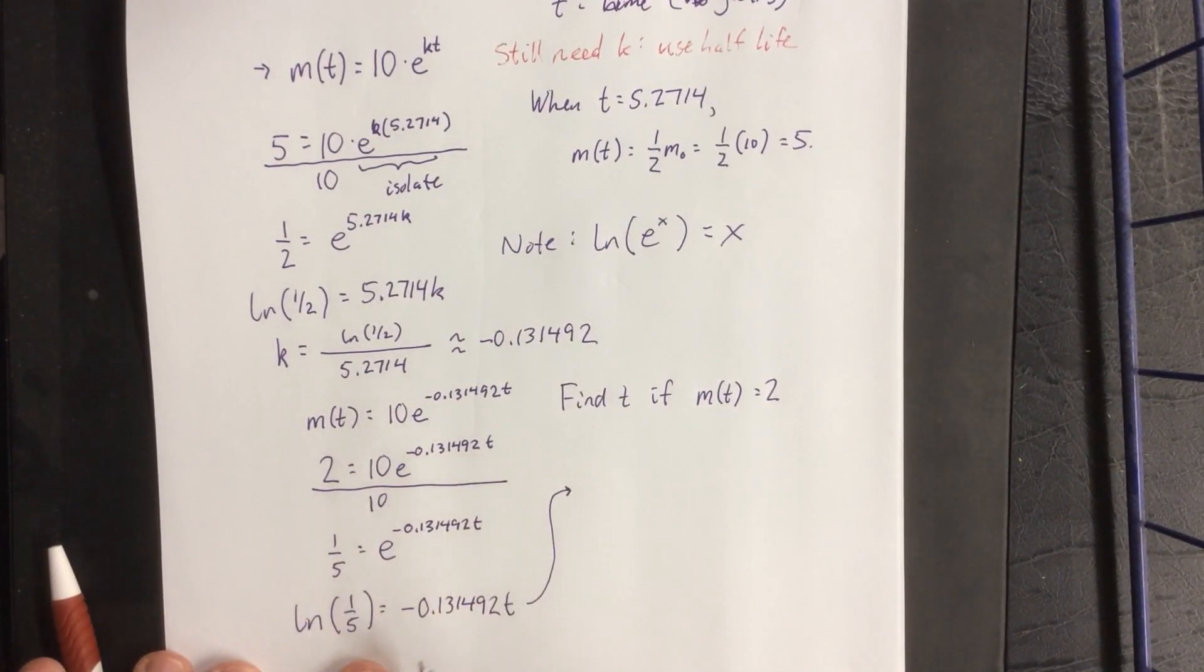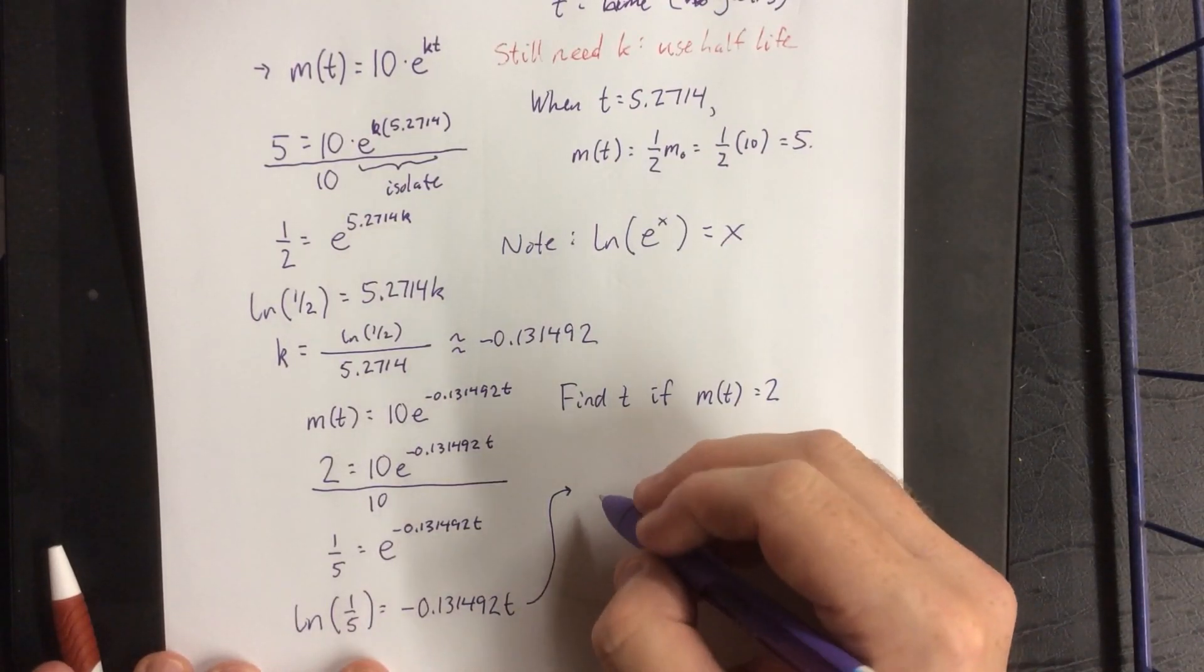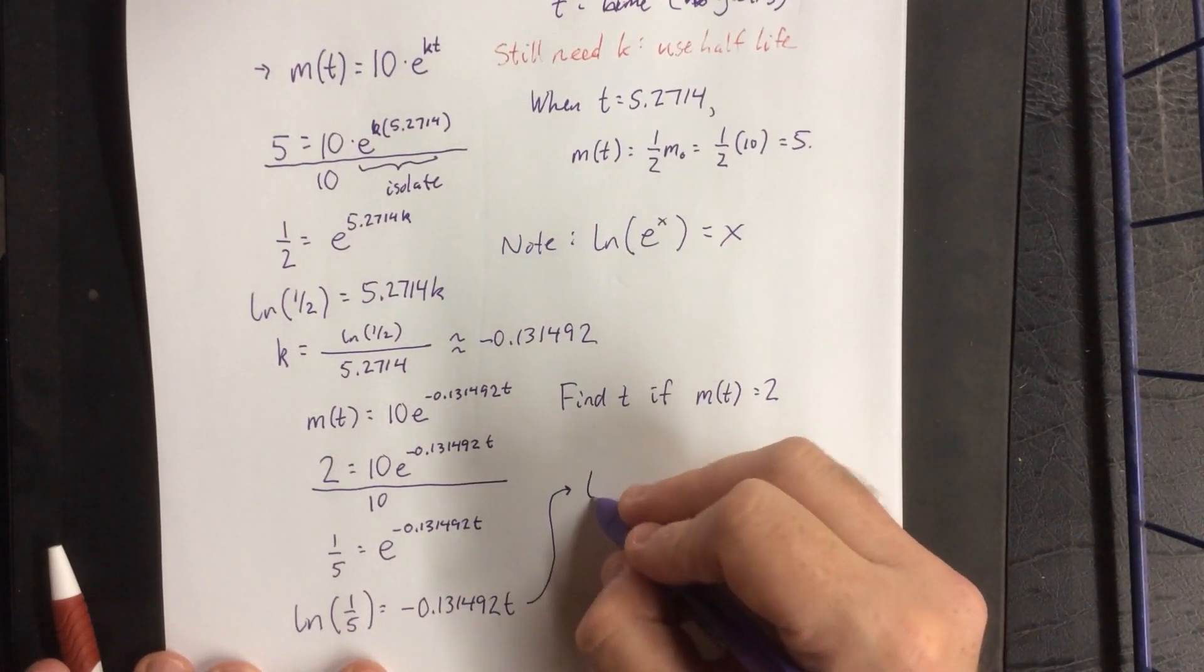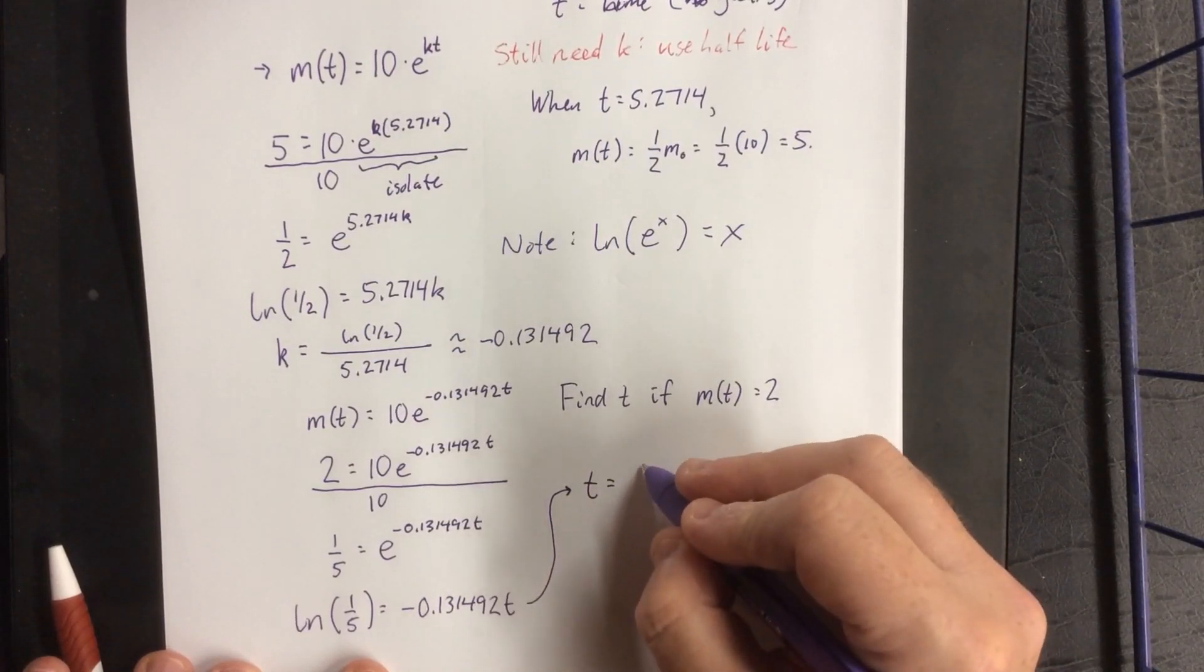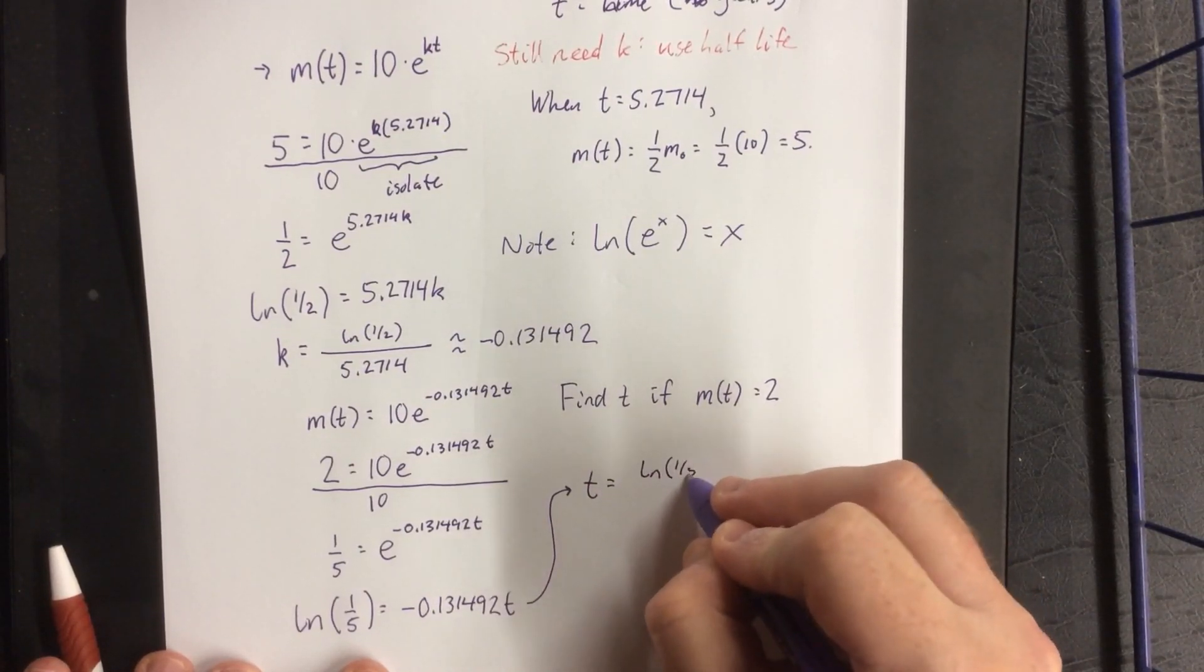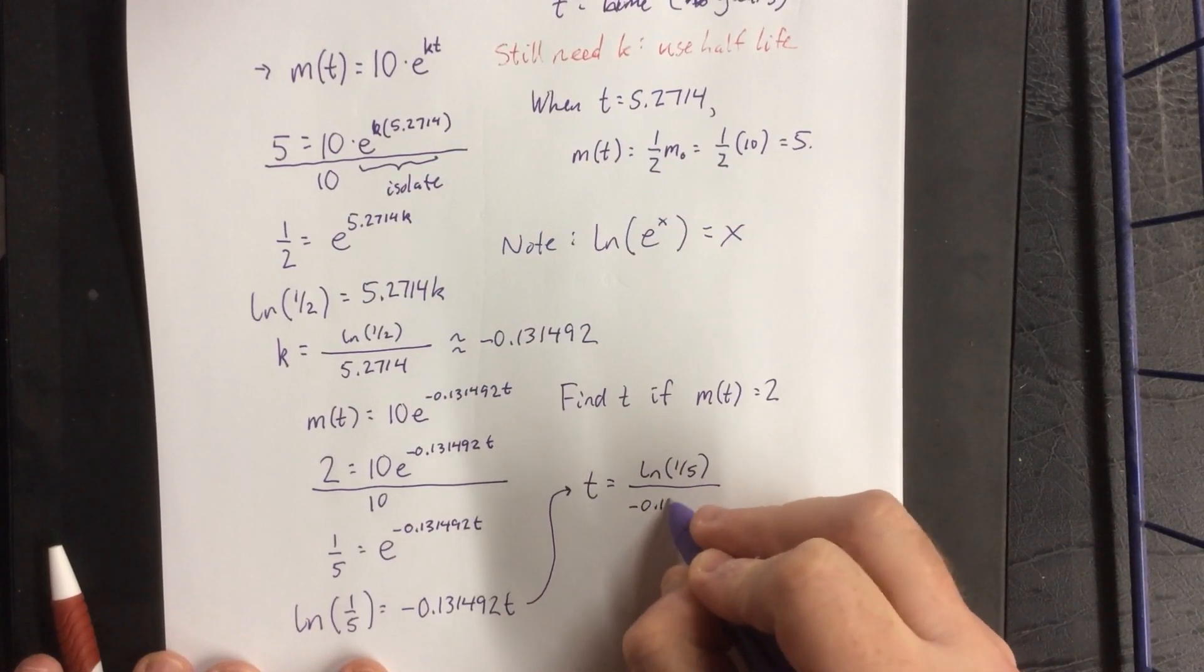And we'll finish this one off by dividing both sides by that coefficient, this value of k that we got not too long ago. So we will get that t is going to be equal to natural log of 1 fifth divided by the value that we got for k.